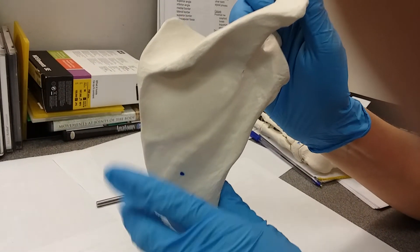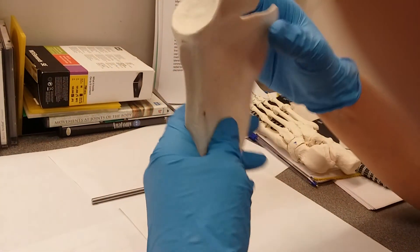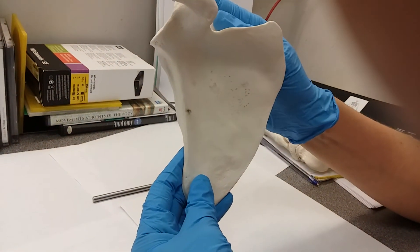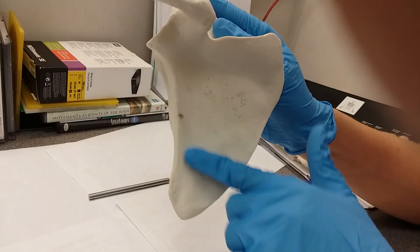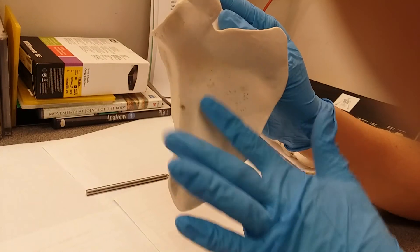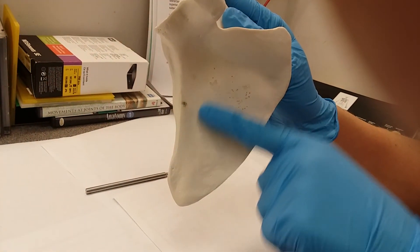Lastly, we're going to flip to the anterior side so we can note the subscapular fossa. That is going to be this area in here. And if you could rub your scapula, you'll notice the depression in the bone.